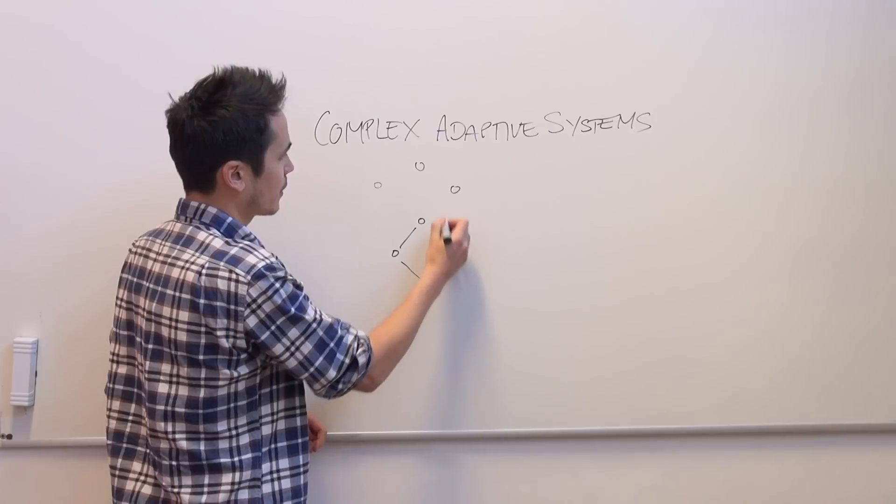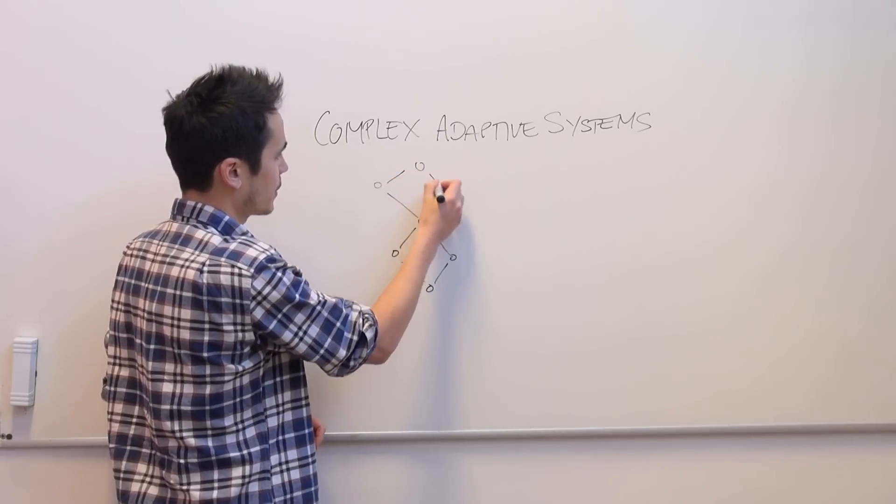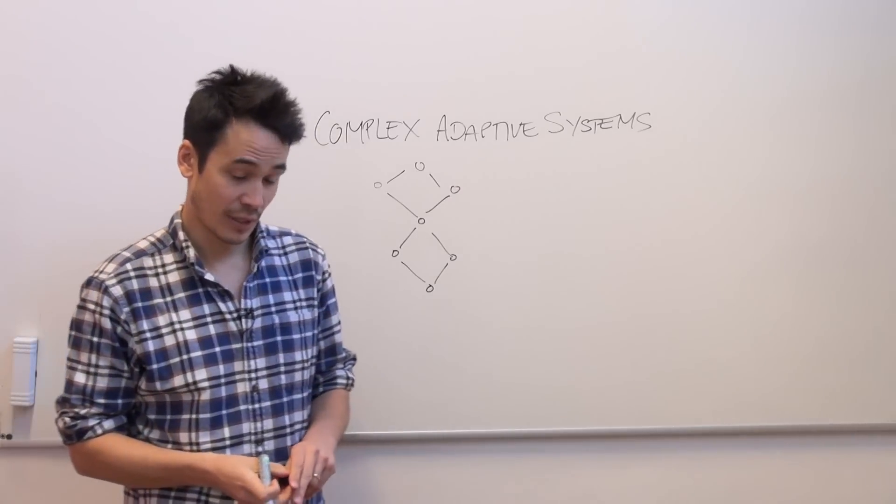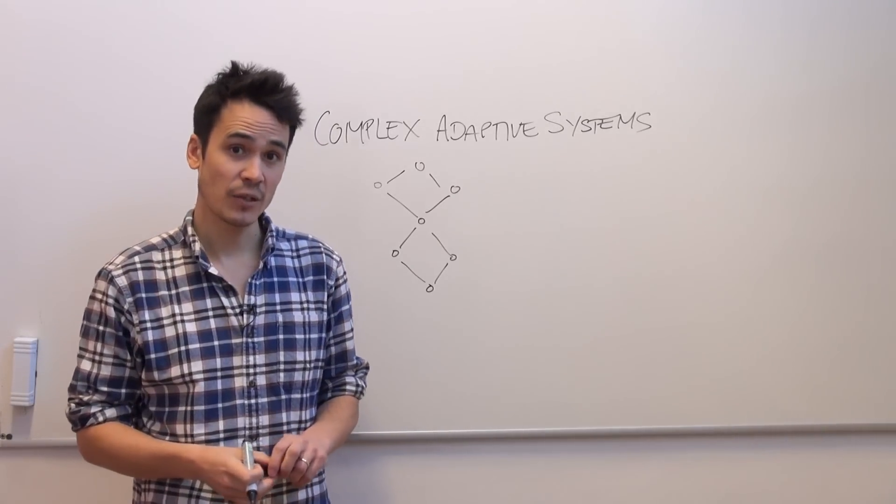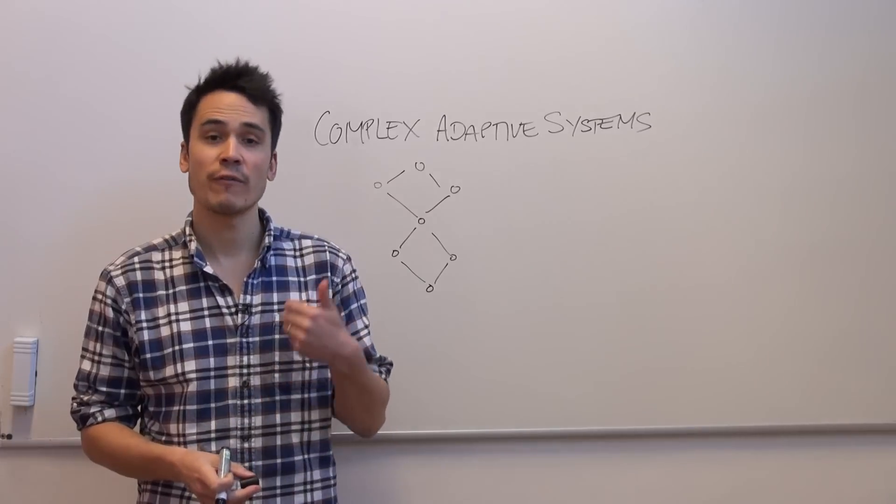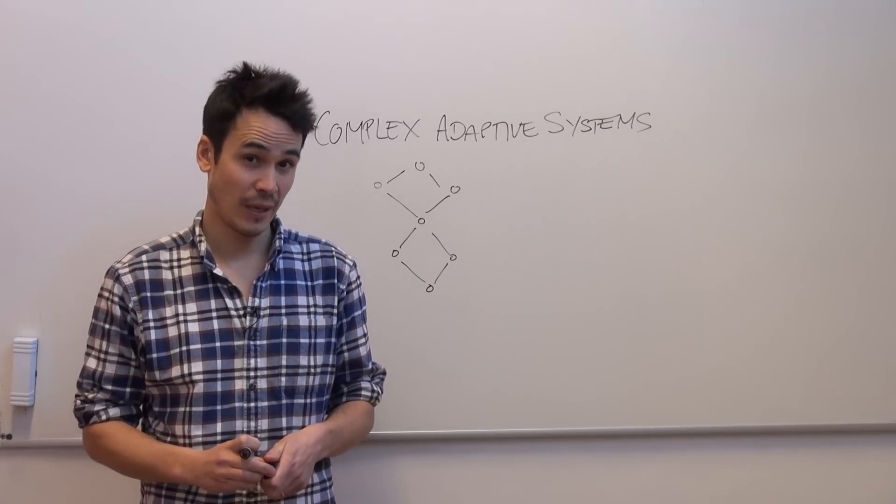The second characteristic of complex adaptive systems is that they are adaptive, constantly changing. So in an ecosystem species evolve or in a financial system people change their behavior.